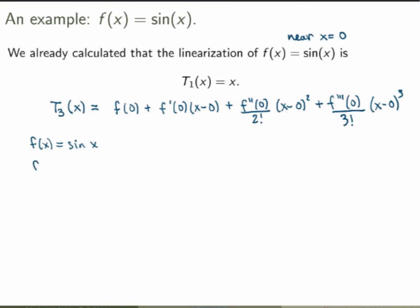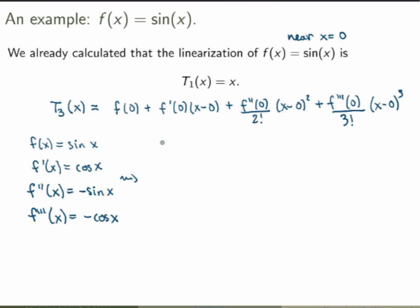To calculate this, we need all derivatives up to order 3 evaluated at x equals zero. The function is sine of x, so the first derivative is cos of x, the second derivative is minus sine of x, and the third derivative is minus cos of x. Evaluating at x equals zero: f of 0 equals sine of 0 equals 0; f prime of 0 equals cos of 0 equals 1; f double prime of 0 equals minus sine of 0 equals 0; f triple prime of 0 equals minus cos of 0 equals minus 1.